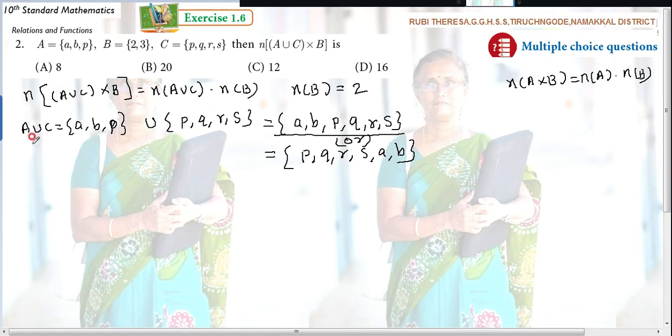But what do you want to find out? N of A union C. You found out N of B. Next what do you want to find out? N of A union C. What is N of A union C? How many elements are there in A union C? Cardinal number. Number of elements present in this set. 1, 2, 3, 4, 5, 6.